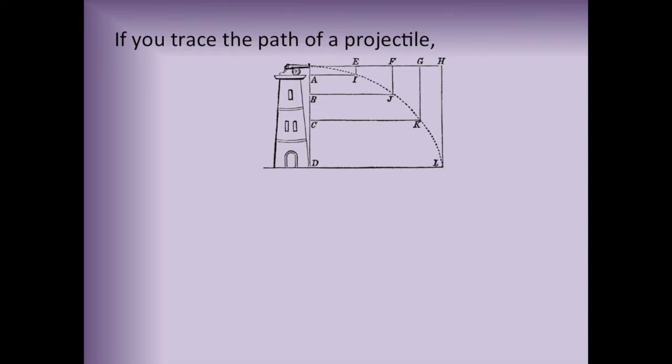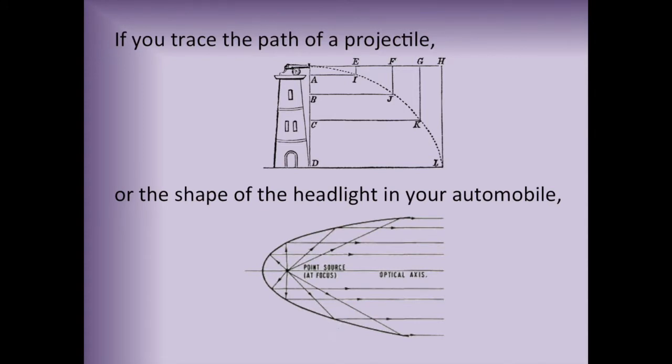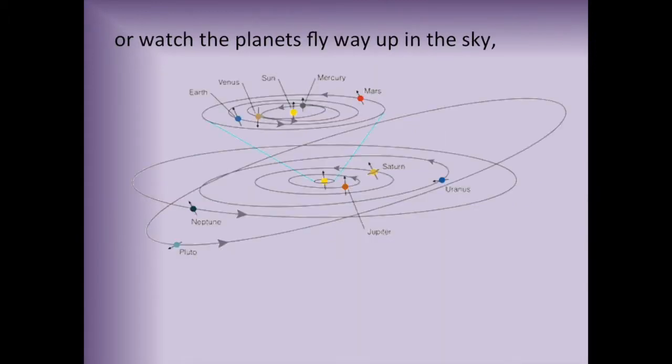If you trace the path of a projectile, or the shape of the headlight in your automobile, or watch the planets fly way up in the sky, conic sections are what you will see.